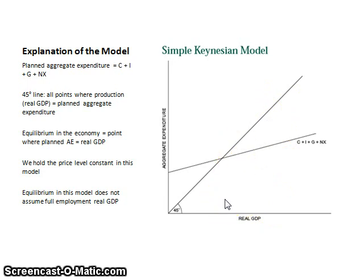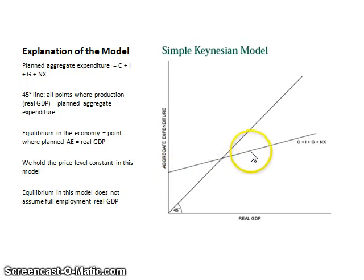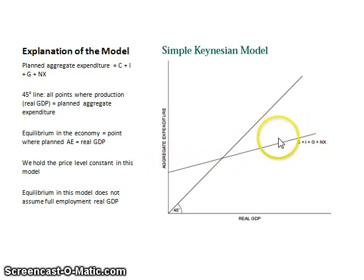That would be an ideal situation. What Keynes found, though, is when he started to investigate consumption, investment, government spending, and net exports, the result was less than ideal. For the nations he was investigating — the United States and Britain — when he added up these variables, it produced a shallow slope line, like the one illustrated in this model.